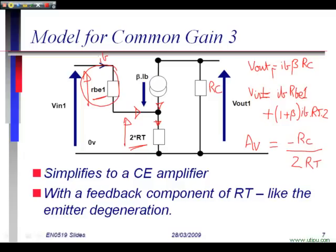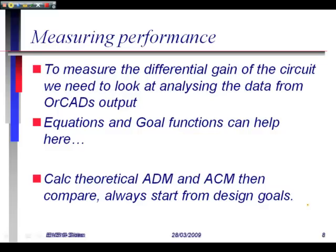If we resolve all of that, we can calculate AV. AV refines itself to minus RC divided by, we can simplify because RT is large, 2RT. We've now calculated our common mode gain. It looks like that standard CE design plus degeneration.